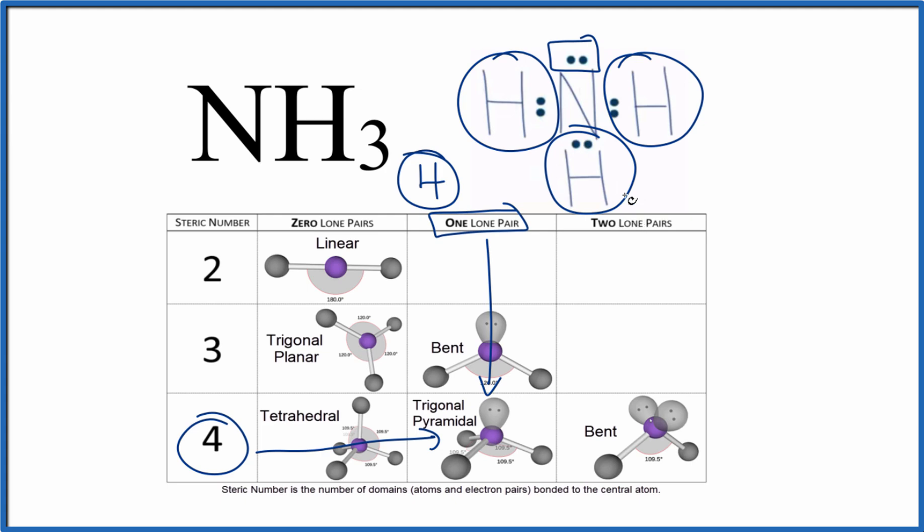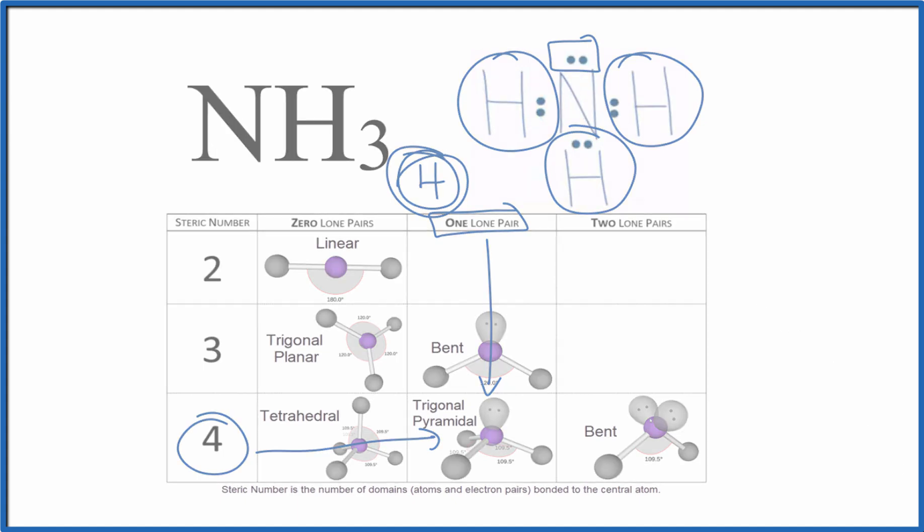This is Dr. B looking at the steric number for NH3, ammonia. It is four: three atoms and one lone pair. Thanks for watching.